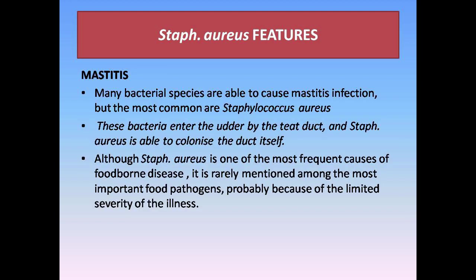Mastitis is one of the most common diseases in animals, mainly cows and buffaloes, in which there is a large compositional change in the milk and also in the stability of the milk. It is mainly caused by many bacterial species, but Staphylococcus aureus is mainly responsible for this disease. This bacterium enters the udder by the teat duct and is able to colonize in large amounts. S. aureus is also one of the most frequent causes of foodborne disease and causes food intoxication, though it is rarely mentioned among the most important food pathogens probably because of the limited severity of the illness.